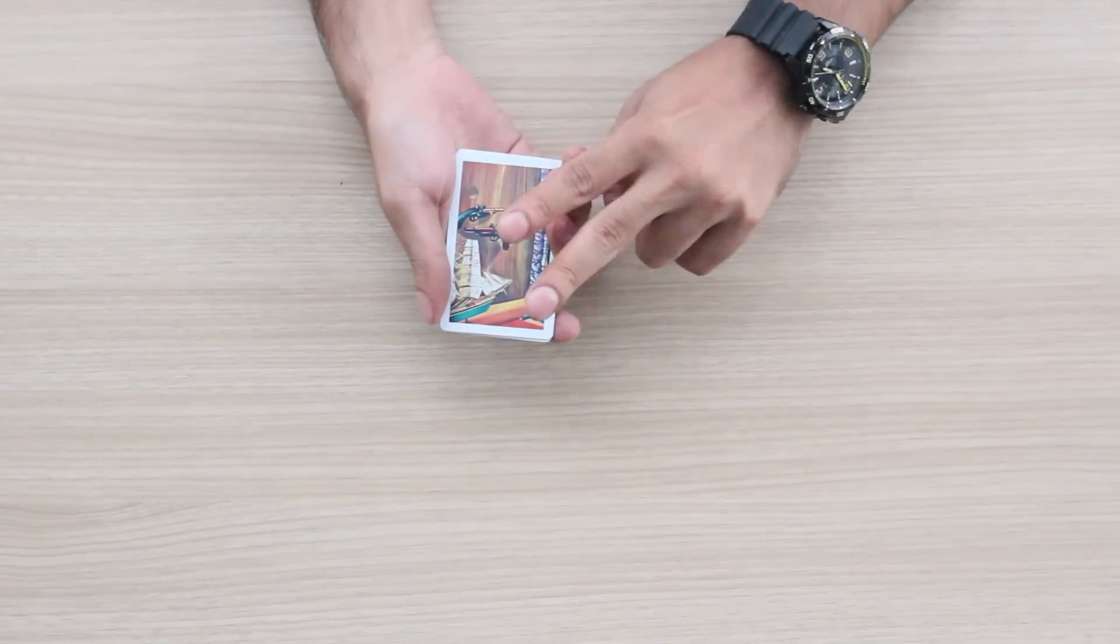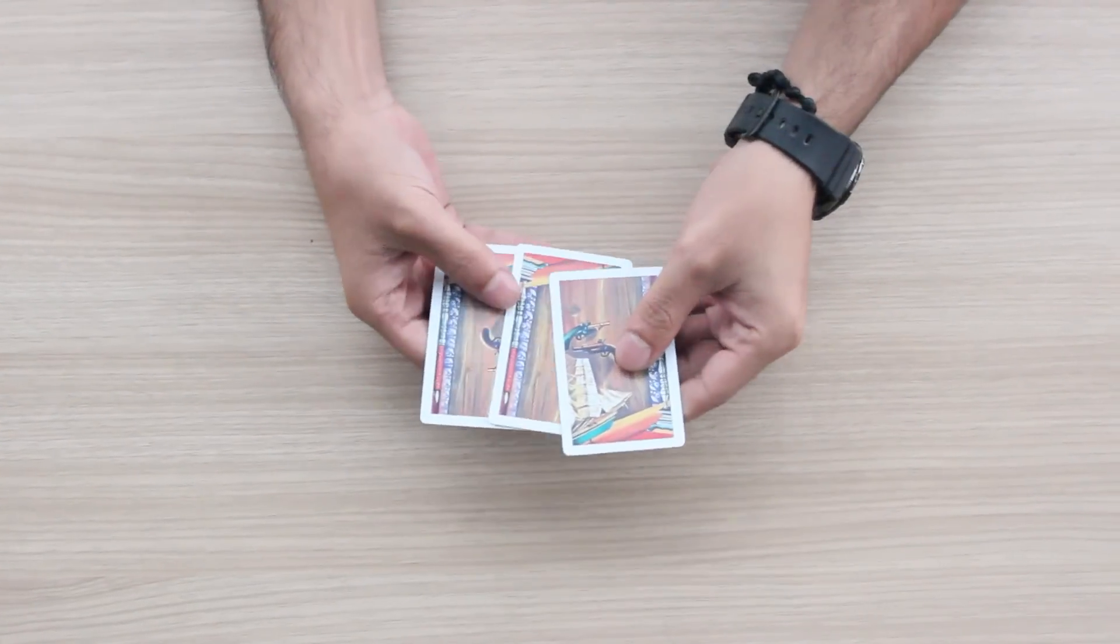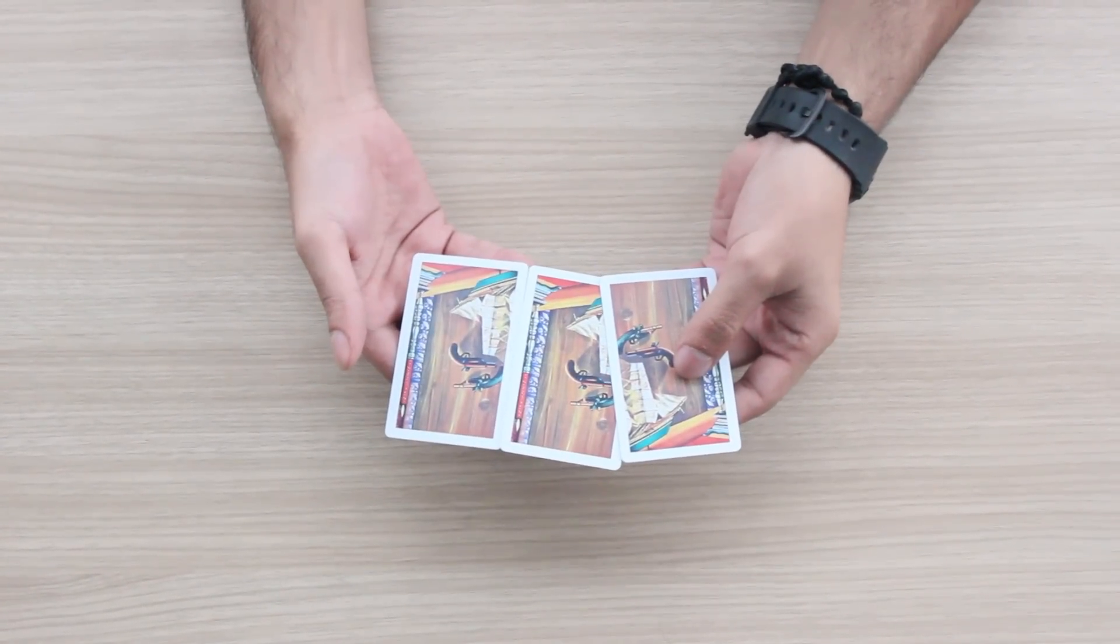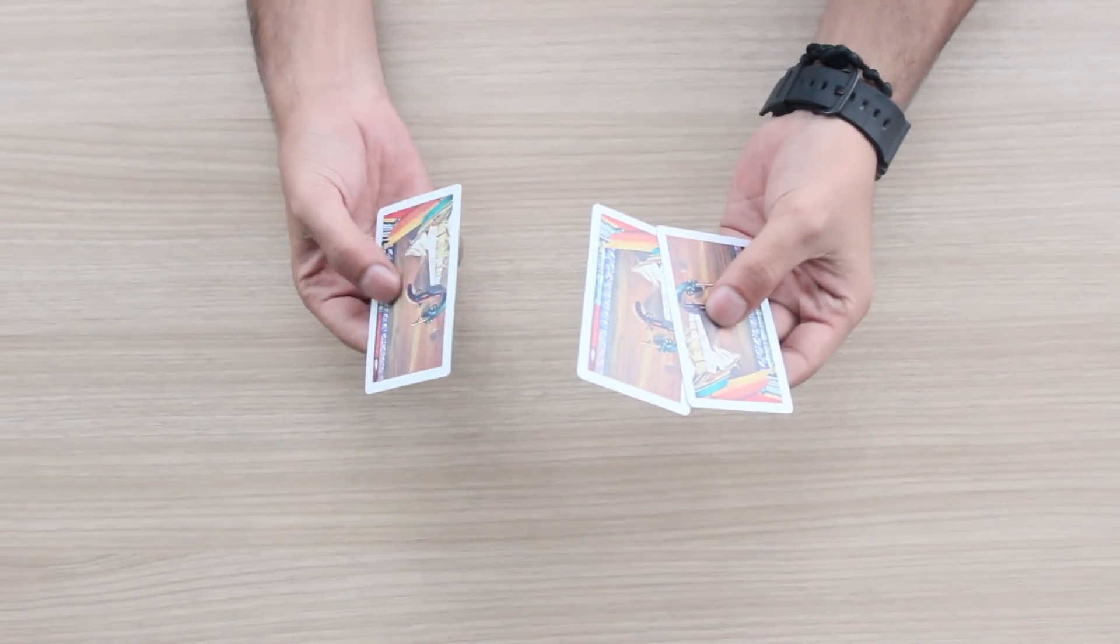He asked me to choose two places, one where I really want to go and the other where I've already been. But you have three cards, I said. He smiles and tells me to write down where I've been twice on two different cards and the other on the third.